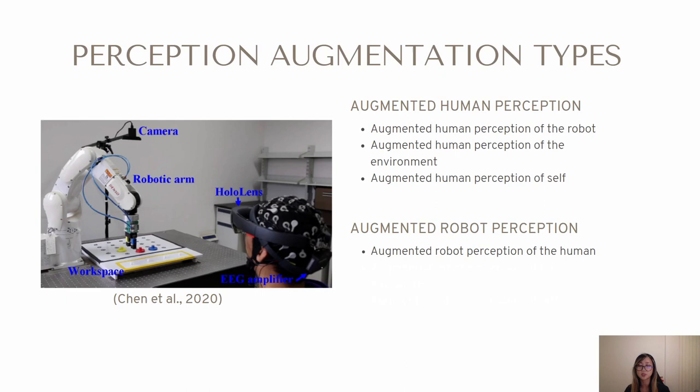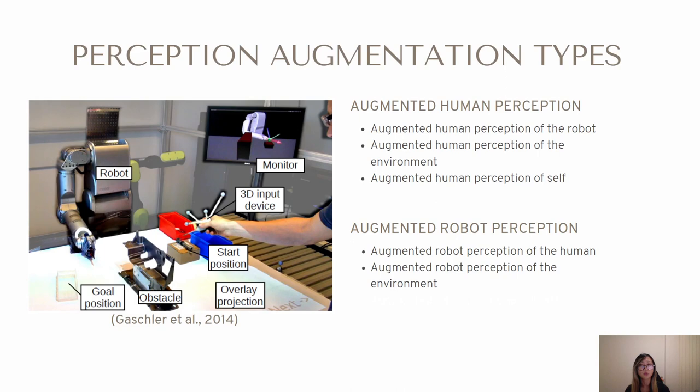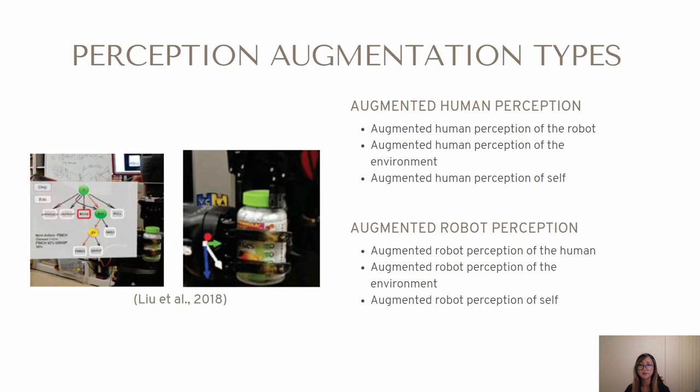Just as AR can be used to augment the perception of the human, it can also be used to augment the perception of the robot. An example of augmented robot perception is when HRI is enabled by integrating AR with the brain-computer interface — to send commands to the robot, the human gaze is on the desired flickering option shown in the AR display. AR can also augment the robot's perception of the environment; for example, it has been used to allow the user to define regions of obstacles to supplement the robot's perception. An example of augmented robot perception of self includes the ability for the user to give feedback to the robot on its incorrect performance, allowing the robot to update its comprehension.